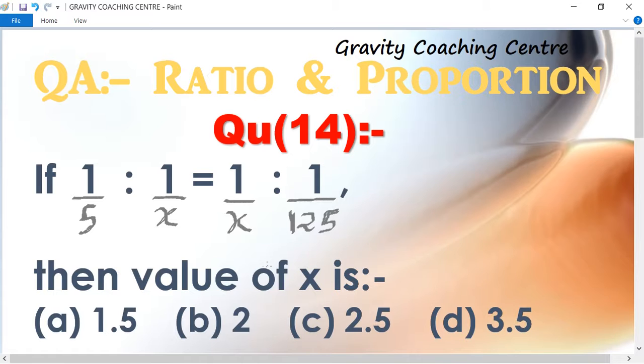Question number 14. If 1 by 5 is to 1 by x equal to 1 by x is to 1 by 125, then value of x is what?